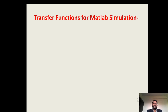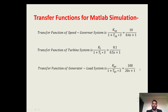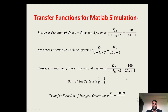For the MATLAB simulation, we will see the transfer functions of the different blocks. The transfer function of the speed governor system is 10 upon (0.4s + 1). The transfer function of the turbine system is 0.1 upon (0.5s + 1). The transfer function of the generator load system is 100 upon (20s + 1). The gain of the system is 1 upon 3. The transfer function of the integral controller is −0.09 upon s. With the help of these transfer functions, we will develop the MATLAB Simulink model for this particular experiment.